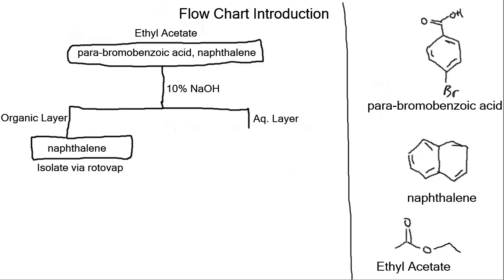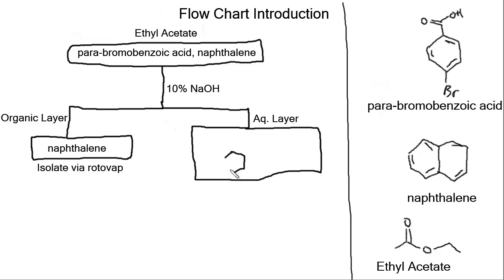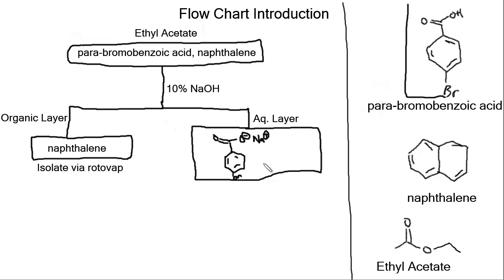For the aqueous layer, the flowchart asks you to draw any salt that forms. Our aromatic ring was not impacted by sodium hydroxide, and bromine was also not impacted. But our carboxylic acid was deprotonated, and now we have a carboxylate anion with a negative charge, and sodium sitting next to it to stabilize that charge. This forms an ionic bond — not a covalent bond — so we never draw a line connecting these two. That ionic bond is a salt formed in solution, which is more water-soluble than the original organic compound, which is why it's in the aqueous layer.